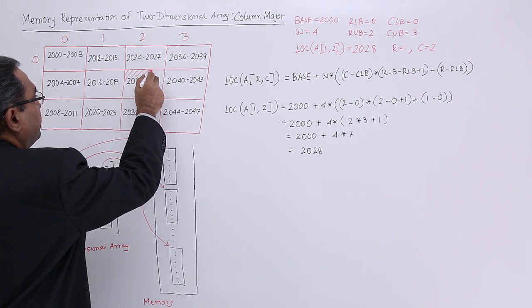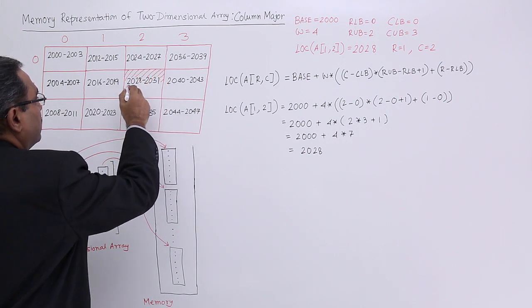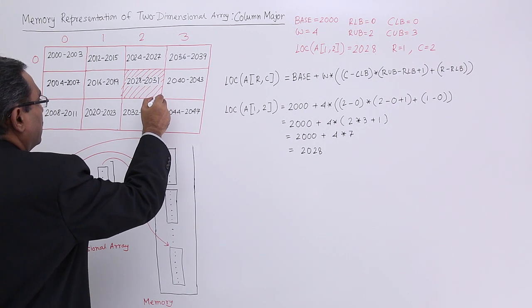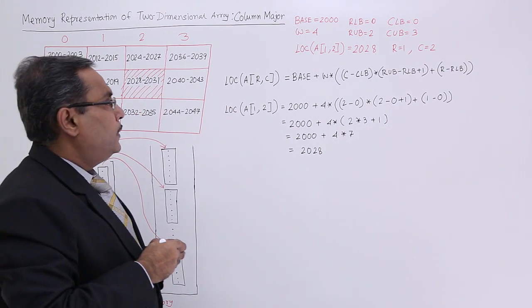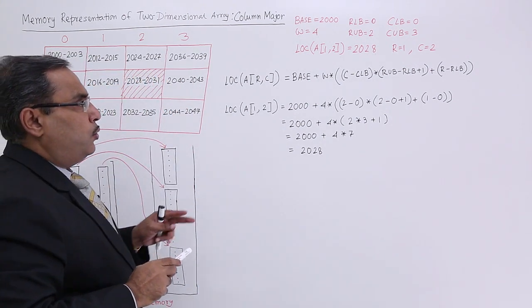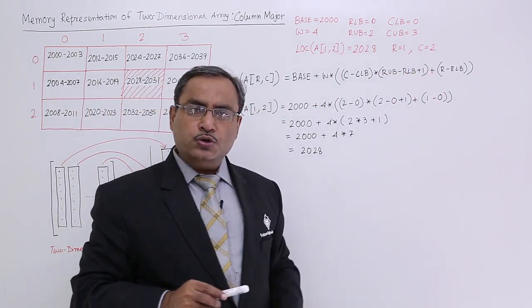This location should be 2028. Yes, 2028 should be the starting address when row is equal to 1 and column is equal to 2.